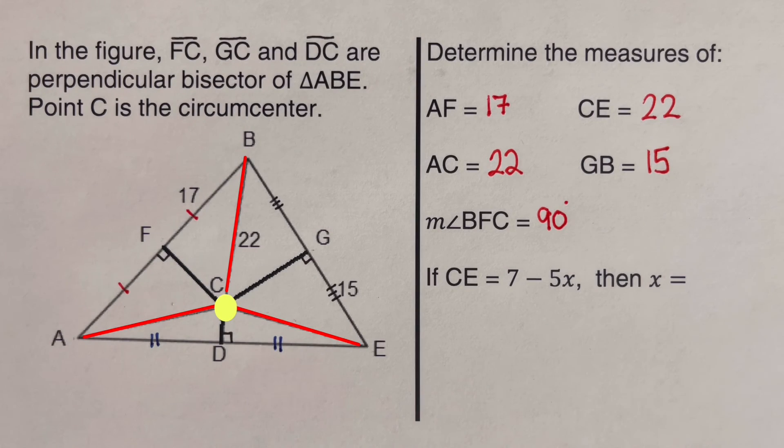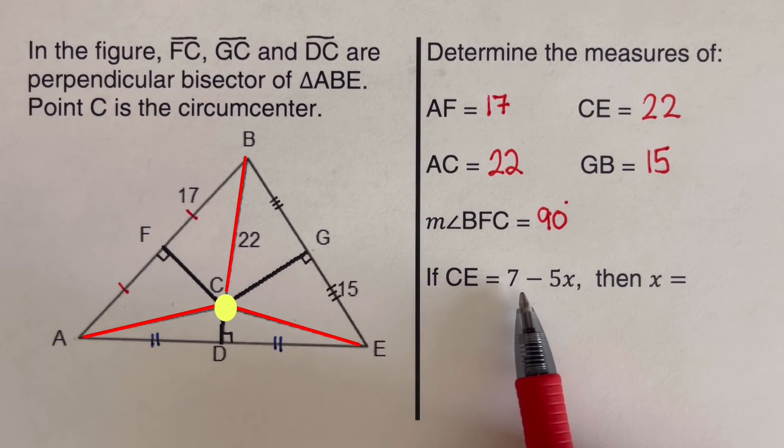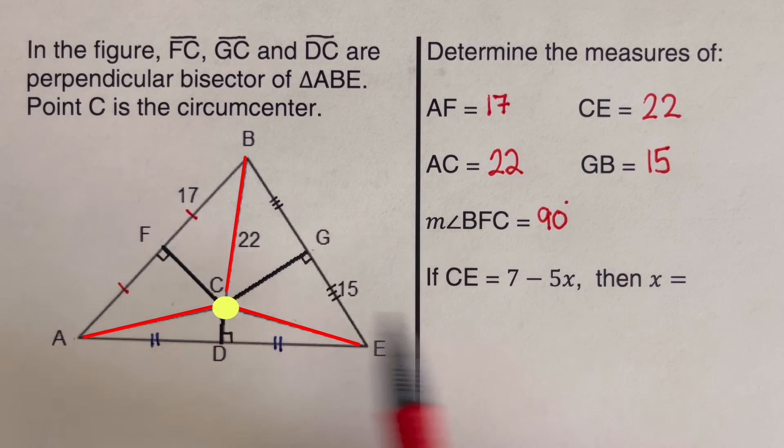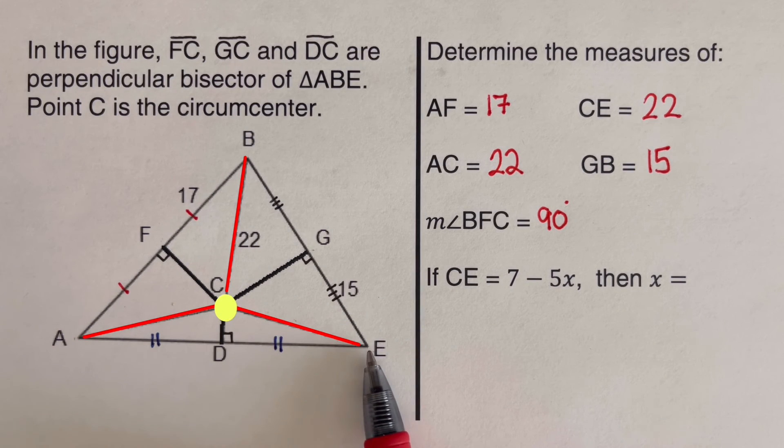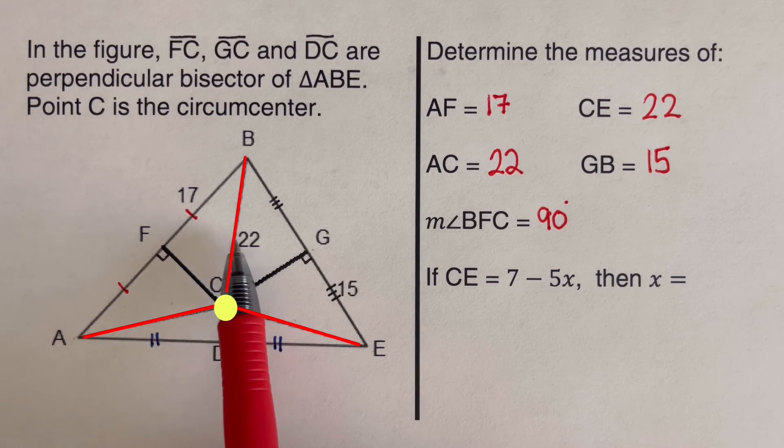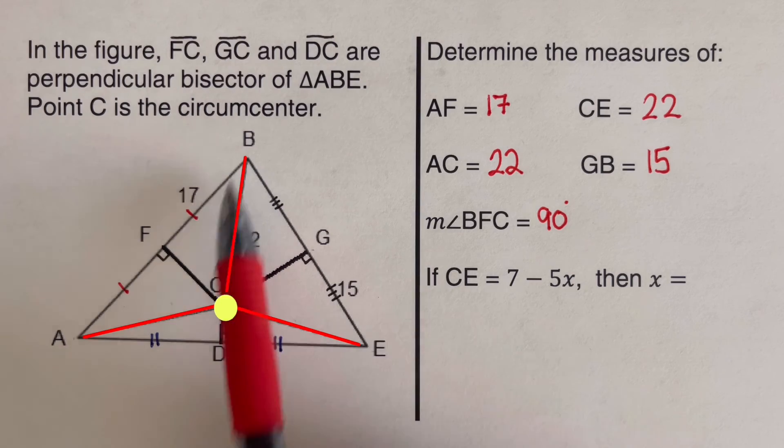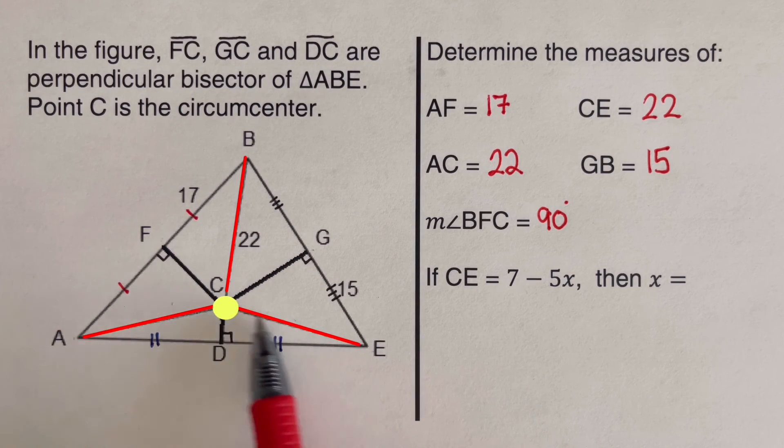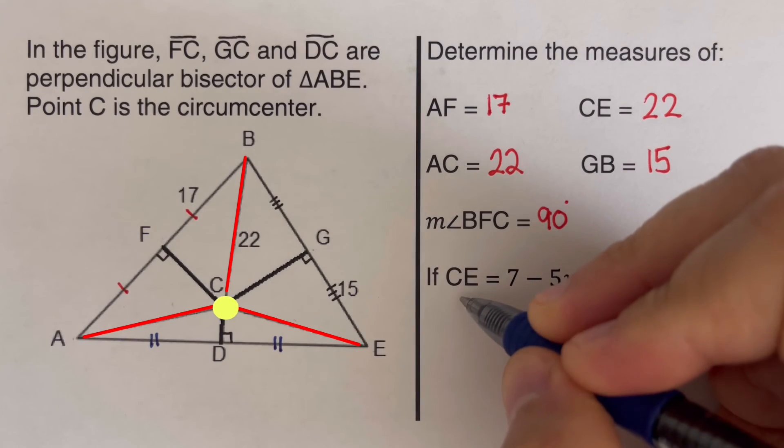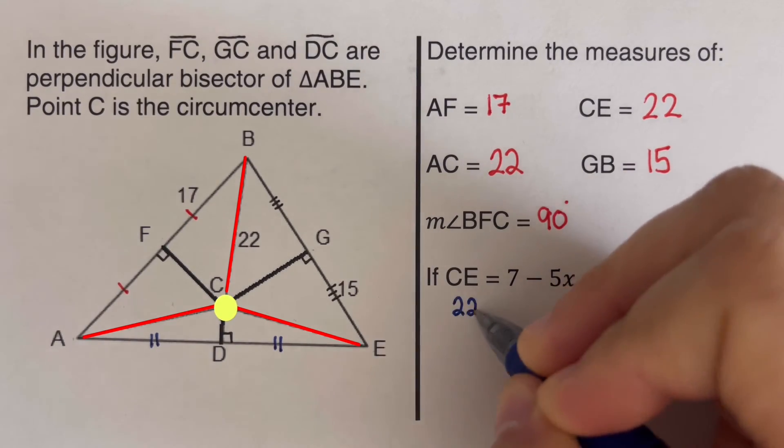Now we're looking for X here. So we're given CE is 7 minus 5X. So CE is 7 minus 5X. And we know that these are the radii of the circle. So BC, AC, and EC are equal to each other. And that tells us that CE is also 22. So I can put that up here, 22. Again, these three are equal. So I can put 22 to that. And I can put 22 also to that one.